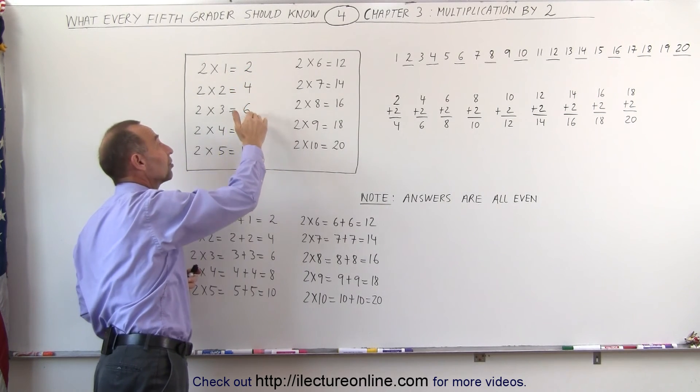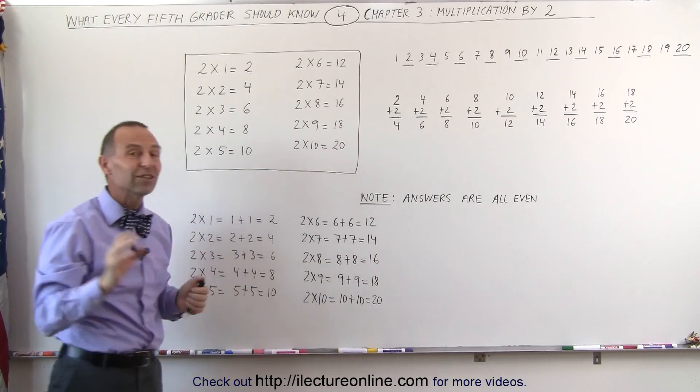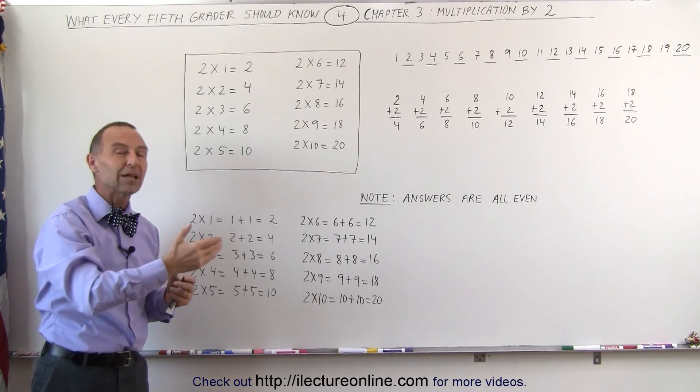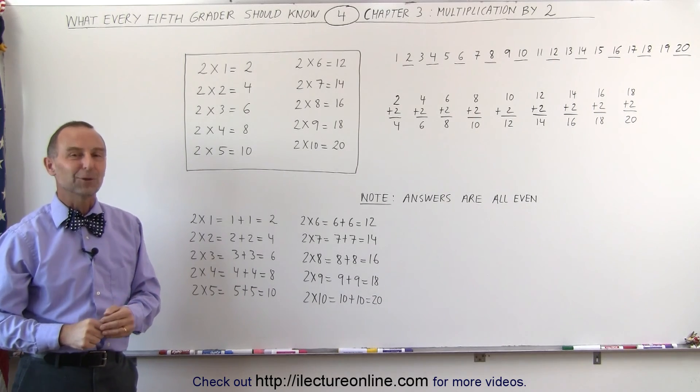The answers are 2, 4, 6, 8, 10, 12, 14, 16, 18, 20. If you see that pattern, and with all the other multiplications, it will be that much easier to do multiplication. In this case, this is multiplication by 2.